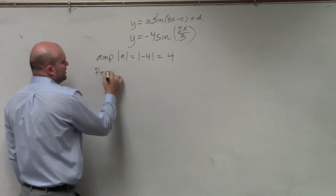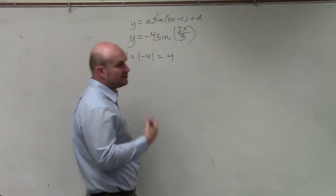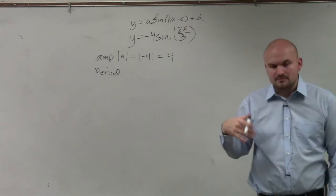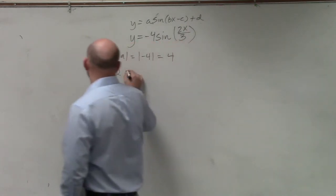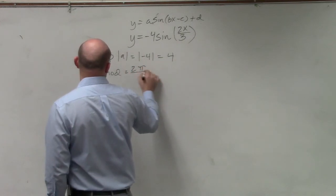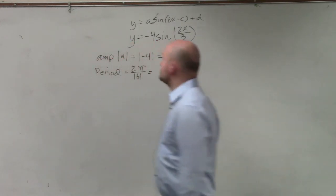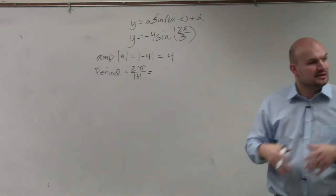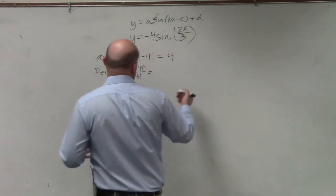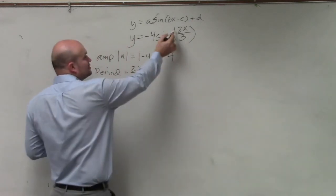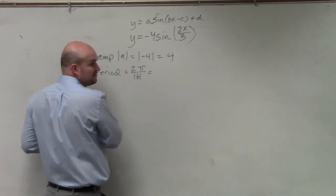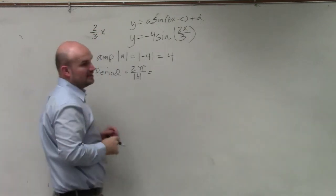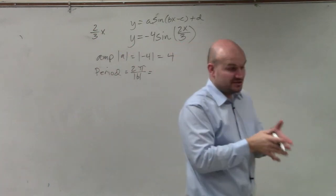The period is the distance it takes for the graph to repeat itself. For sine and cosine, the period is 2 pi divided by the absolute value of b. So b is the value that's multiplying your x. It's very important that you understand that 2 times x over 3 is the same thing as 2 thirds x. Therefore, b in this case is going to be 2 thirds.